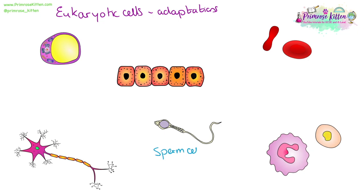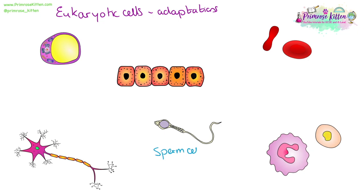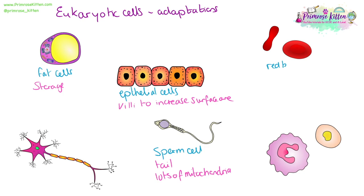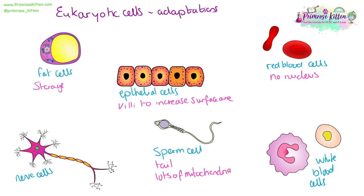Eukaryotic cells can be adapted in a range of ways to suit their functions. For example, this sperm cell has a tail and lots of mitochondria just behind the head to help it swim. Epithelial cells have a large number of villi to increase surface area. Fat cells store lipids that can be turned into energy. Red blood cells are concave and have no nucleus, so there's more space for carrying oxygen.